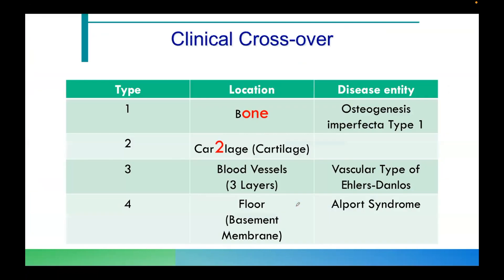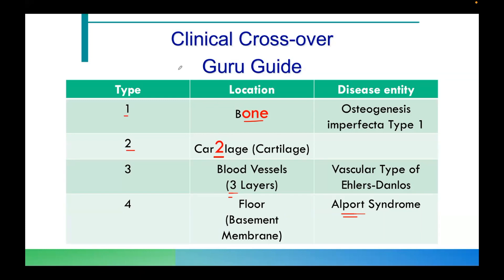For a clinical crossover mnemonic: type 1 collagen is found in bone — the last three letters of 'bone' is 'one' — and its disease entity is osteogenesis imperfecta. Type 2 is cartilage. Type 3 relates to blood vessels, which have three layers, and is associated with Ehlers-Danlos syndrome. Type 4 is the basement membrane, seen in Alport syndrome, which presents with deafness and nephritis.